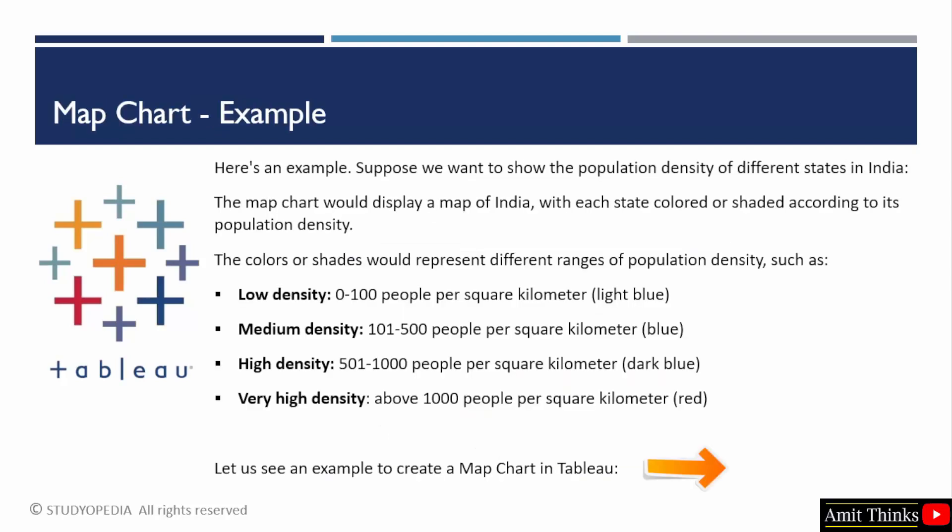Let us see another example. Let us say we want to display the population density of different states in India. So your map will display a map of India with states colored or shaded according to population density. There will be different ranges — low, medium, high, and very high. For example, 0 to 100 people per square kilometer is low density shown in light blue, and the maximum will have red color for very high density. This is just an example of a map chart.